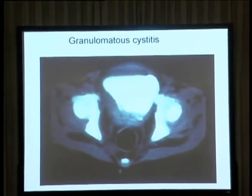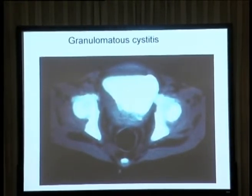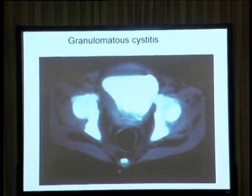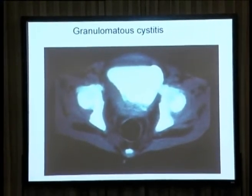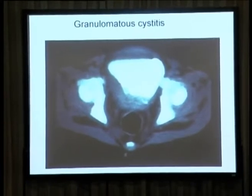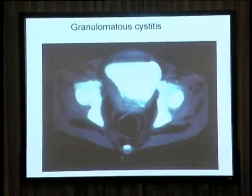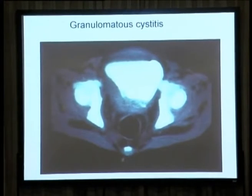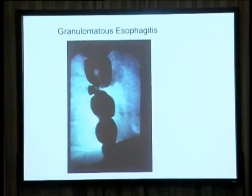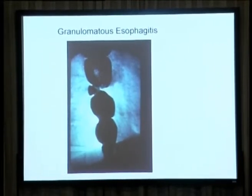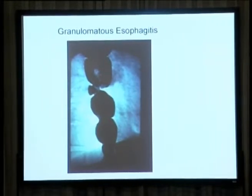Other manifestations of CGD include excessive inflammation. This CAT scan shows the bladder abnormally thickened. Sometimes in CGD there can be obstruction of the genitourinary tract — the kidneys, ureters, and bladder. Here is an esophagus from a CGD patient — the food pipe — which is abnormal with kinks and obstructions. About a third of CGD patients have inflammatory bowel disease that resembles Crohn's disease.